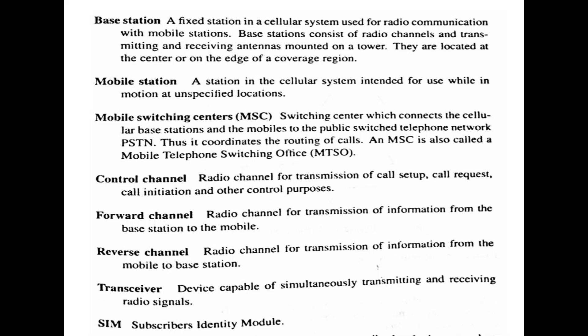Next are some terminologies used in mobile communication. A base station is a fixed station in a cellular system used for radio communication with mobile stations. It consists of radio channels, transmitting and receiving antennas mounted on a tower, located at the center or edge of a coverage region. The cell is the range that a tower can handle, and the base station is at the midpoint of that cell. A mobile station is our mobile phone — a station intended for use while in motion at an unspecified location.